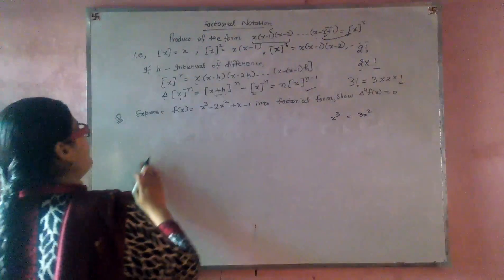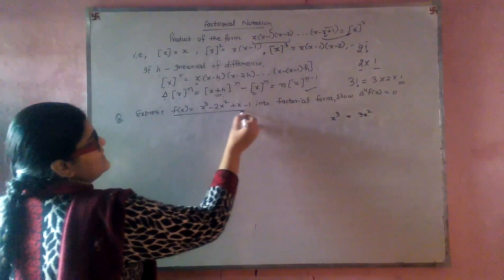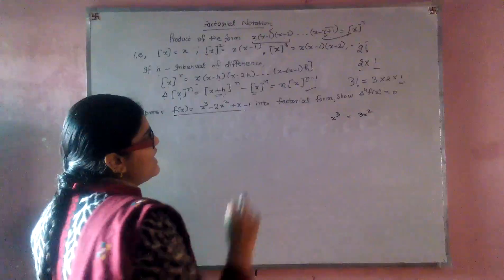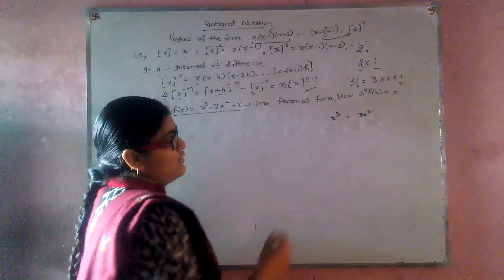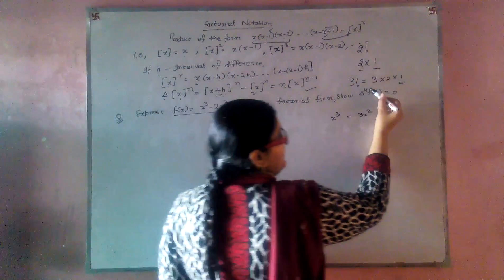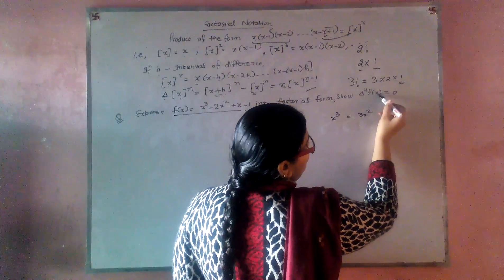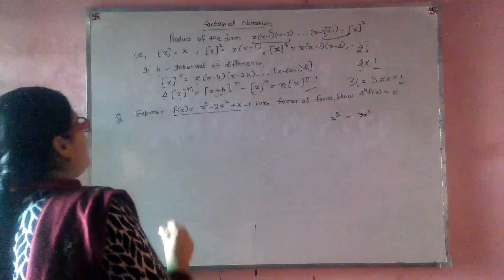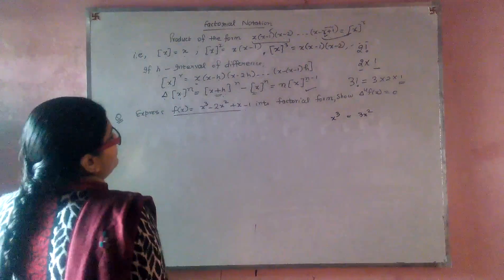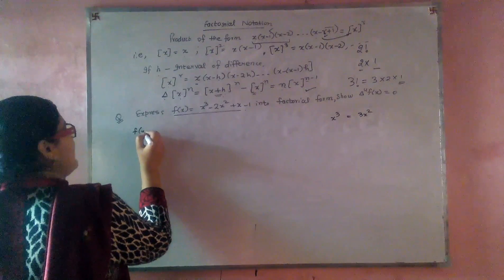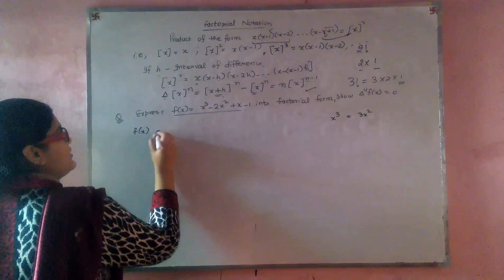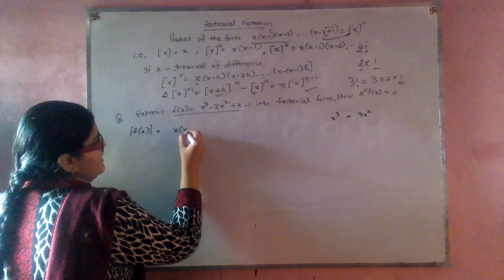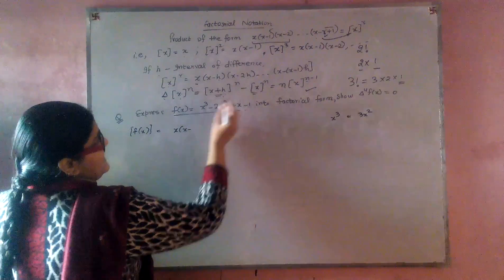Let us take an example. We have to express this term into factorial form, and then we have to show that the forward difference operator of the fourth term of f(x) becomes 0. We express it in factorial notation.